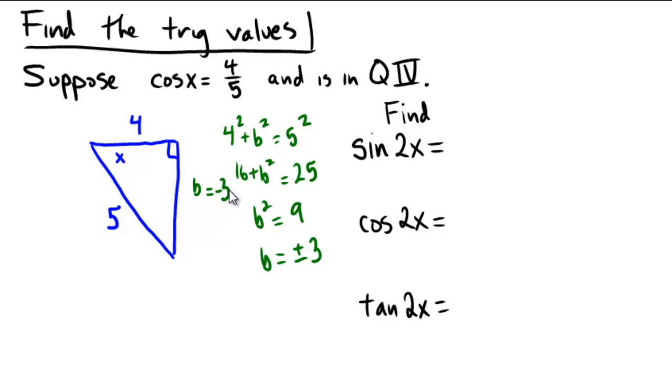Now apply the double angle formulas. So the sine of 2x is equal to 2 sine x times cosine x.